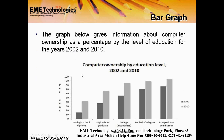For a bar graph, you explain and make a comparison. For example: the graph gives information about computer ownership as a percentage by the level of education for the years 2002 and 2010. According to this data, computer ownership relates to education level, and the data is shown as a percentage.